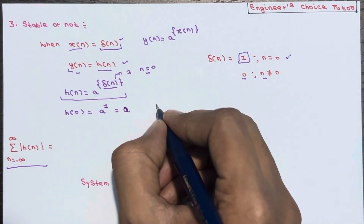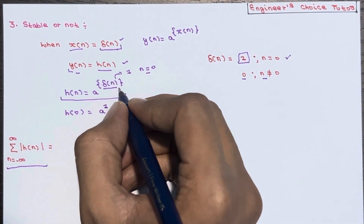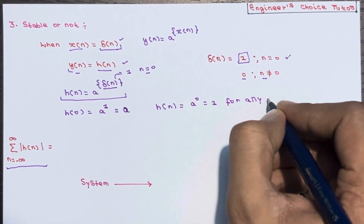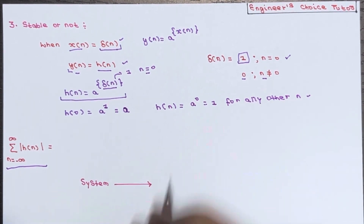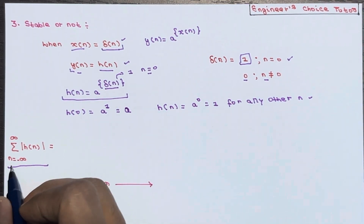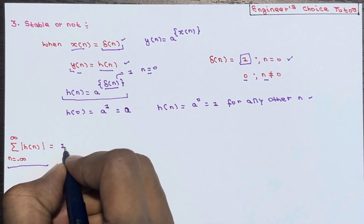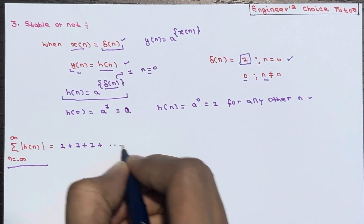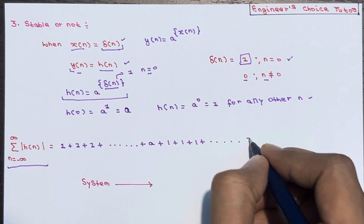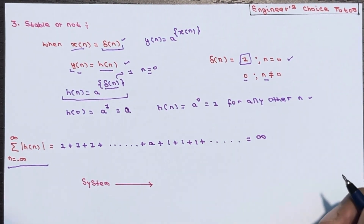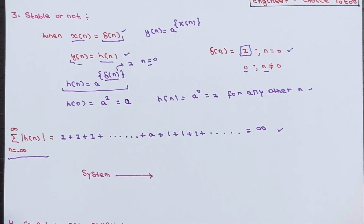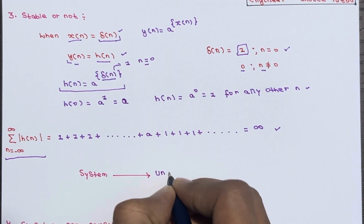For all other values of n, δ(n) = 0, so h(n) = a^0 = 1. Now evaluating the summation of |h(n)| from n = −∞ to +∞: we get 1 + 1 + 1 + ... + a (at n=0) + 1 + 1 + 1 + ..., which sums to infinity. The impulse response is not absolutely summable, so our system is an unstable system.